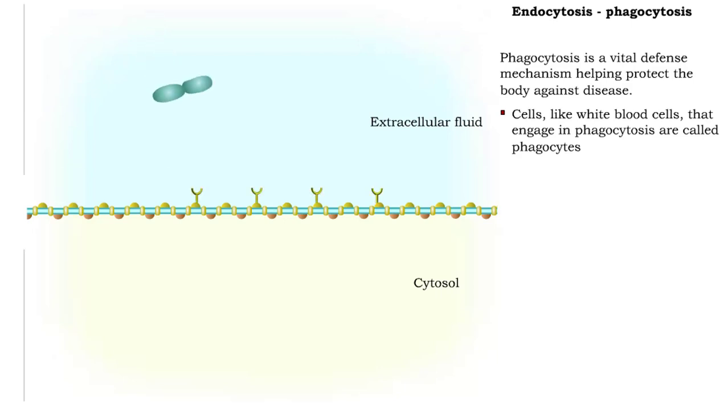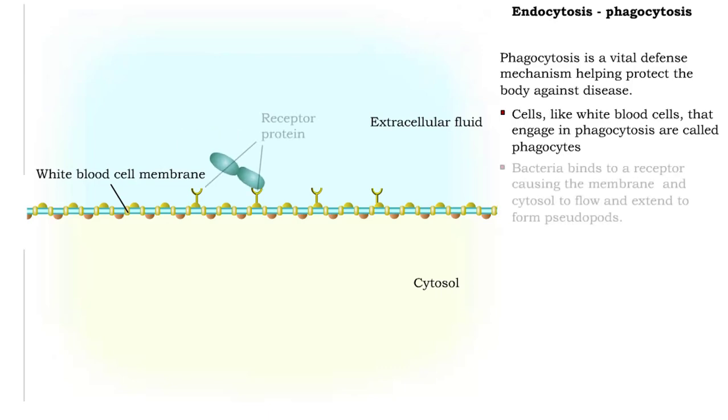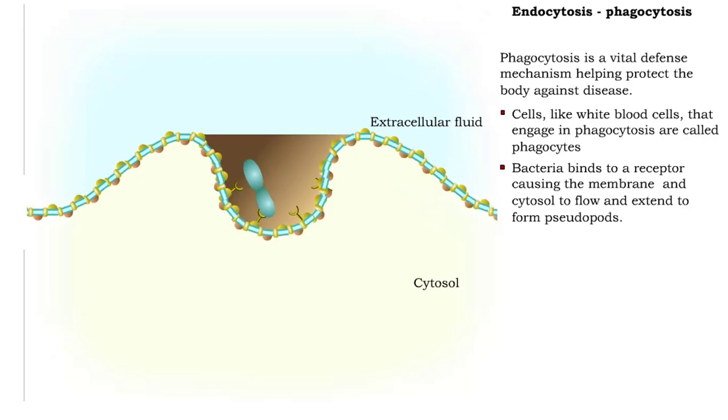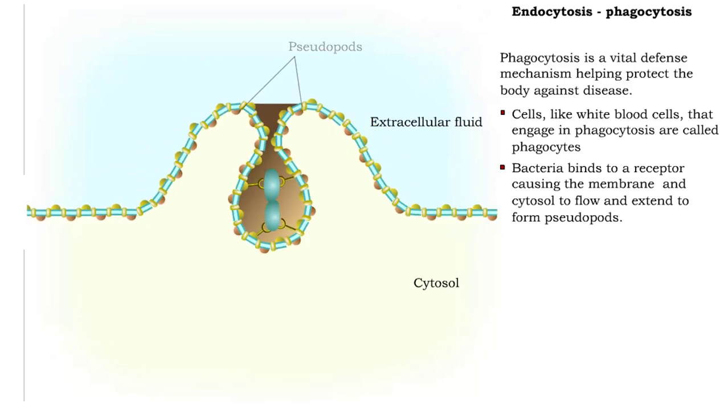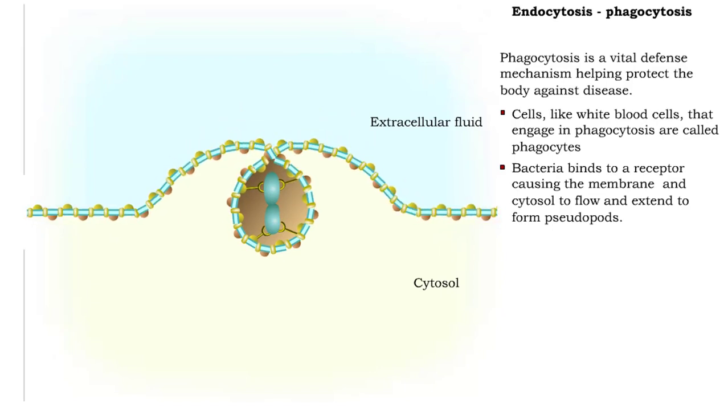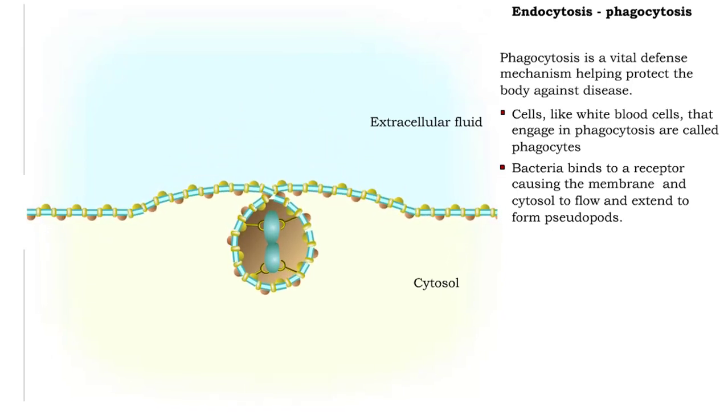Large particles, like bacteria, bind to a receptor, causing the membrane to extend to form pseudopods, which then surround the bacteria, forming a vesicle called a phagosome.